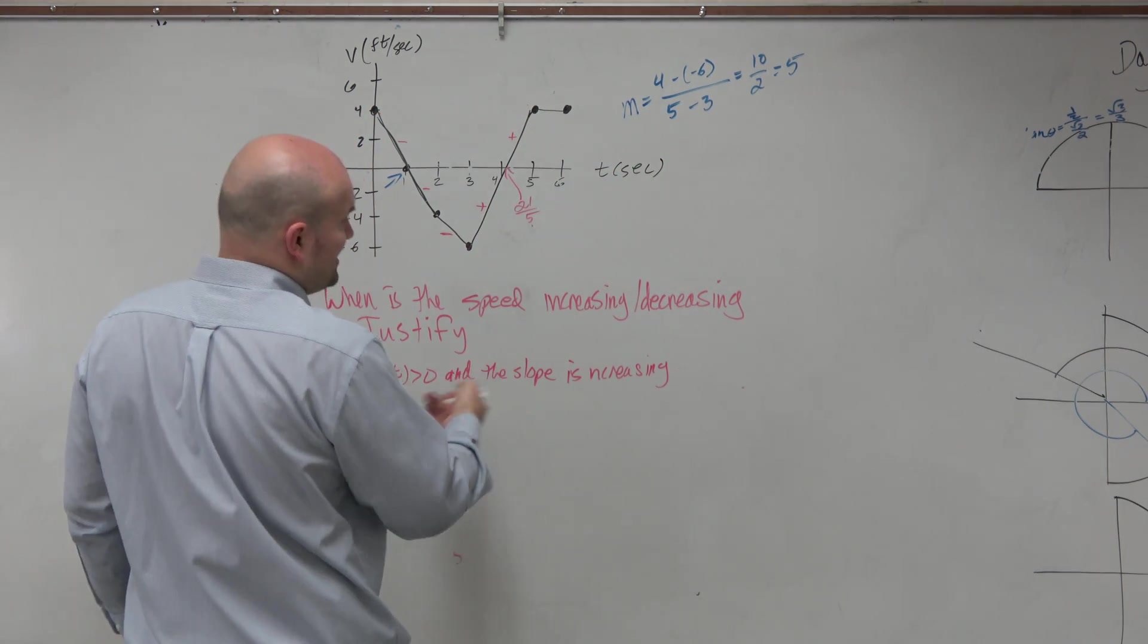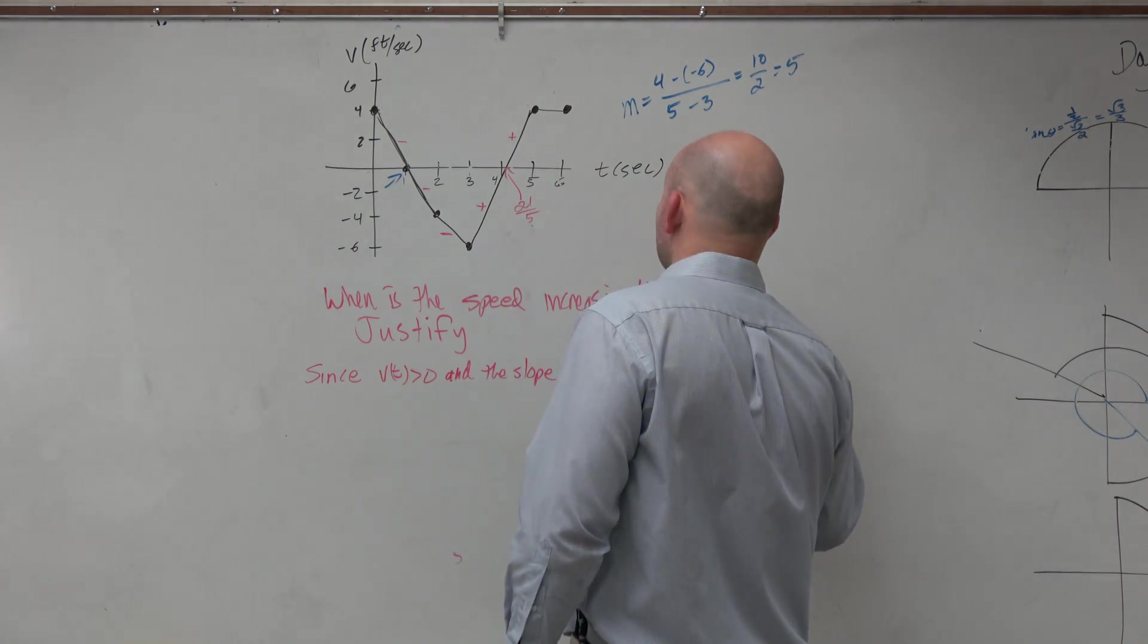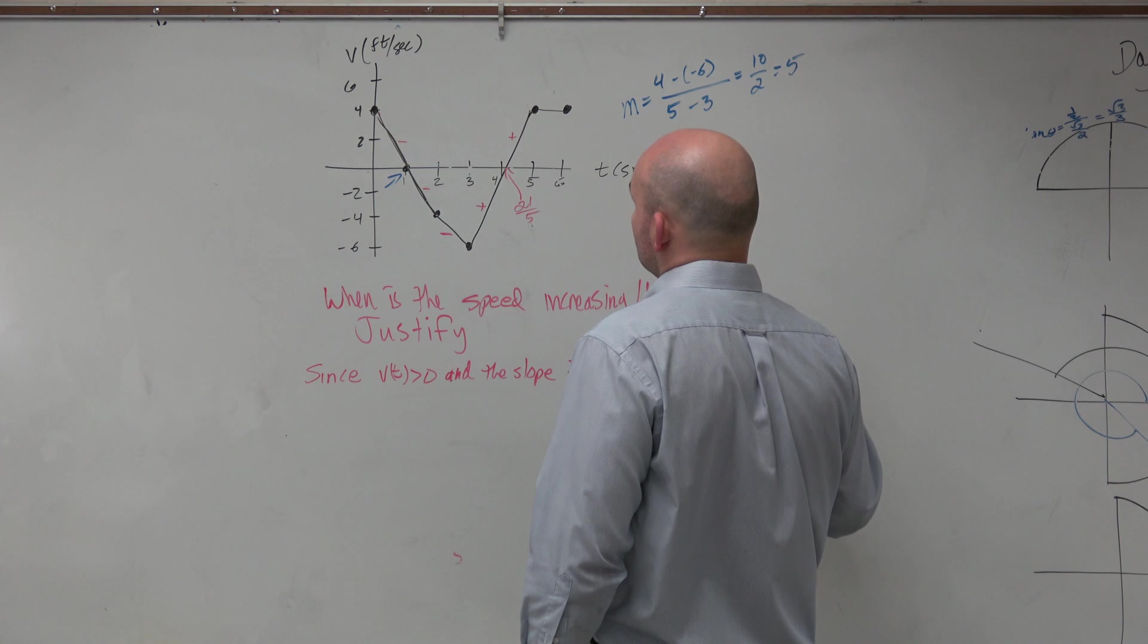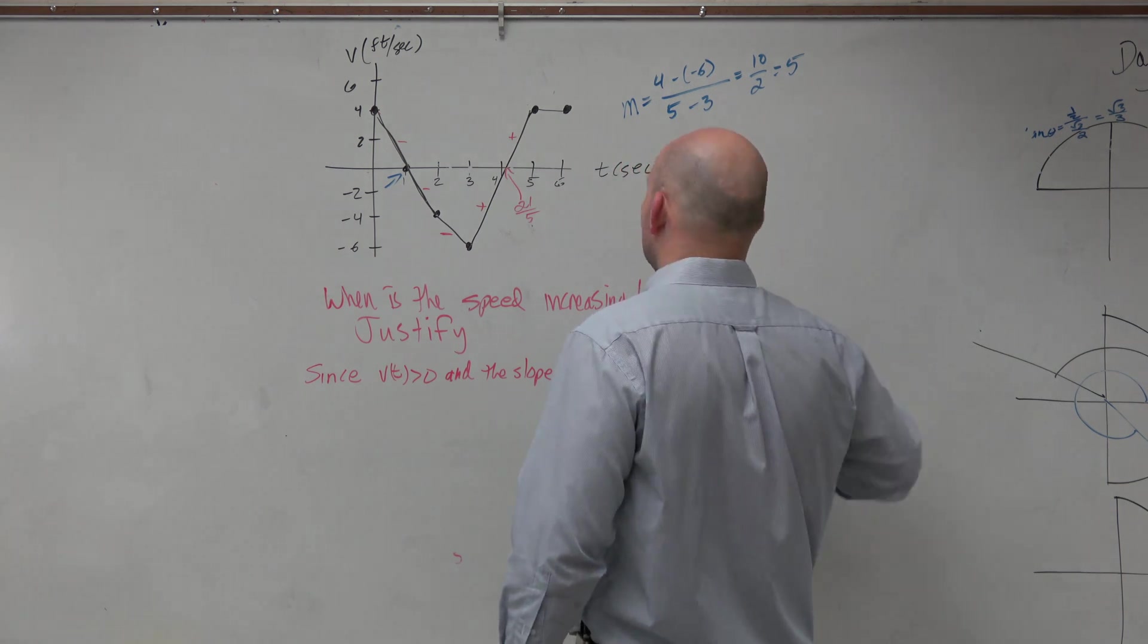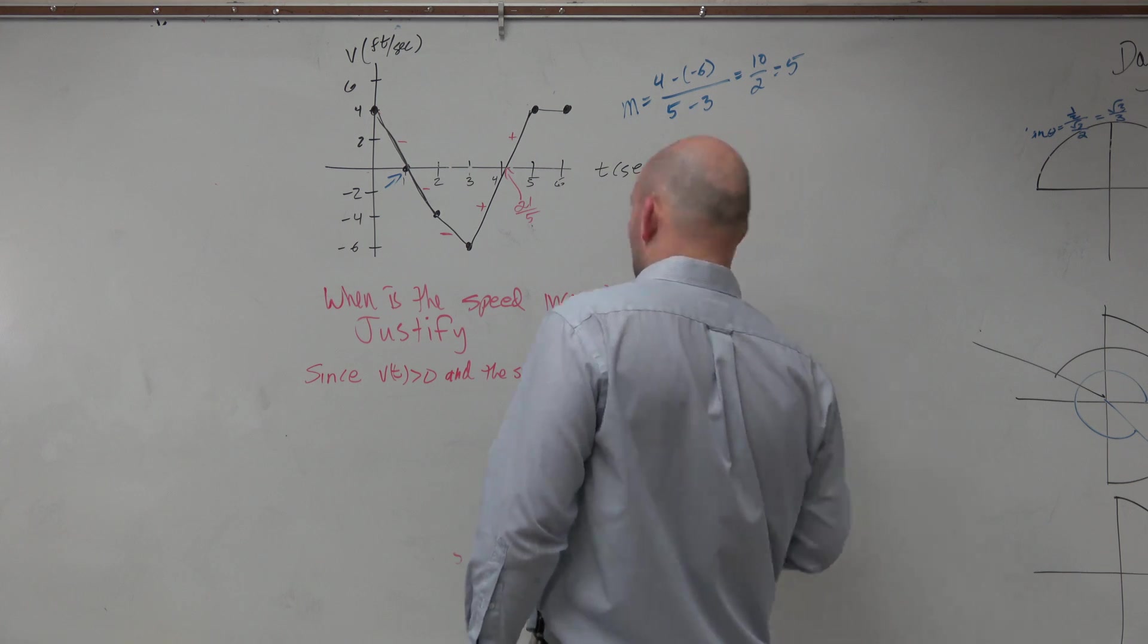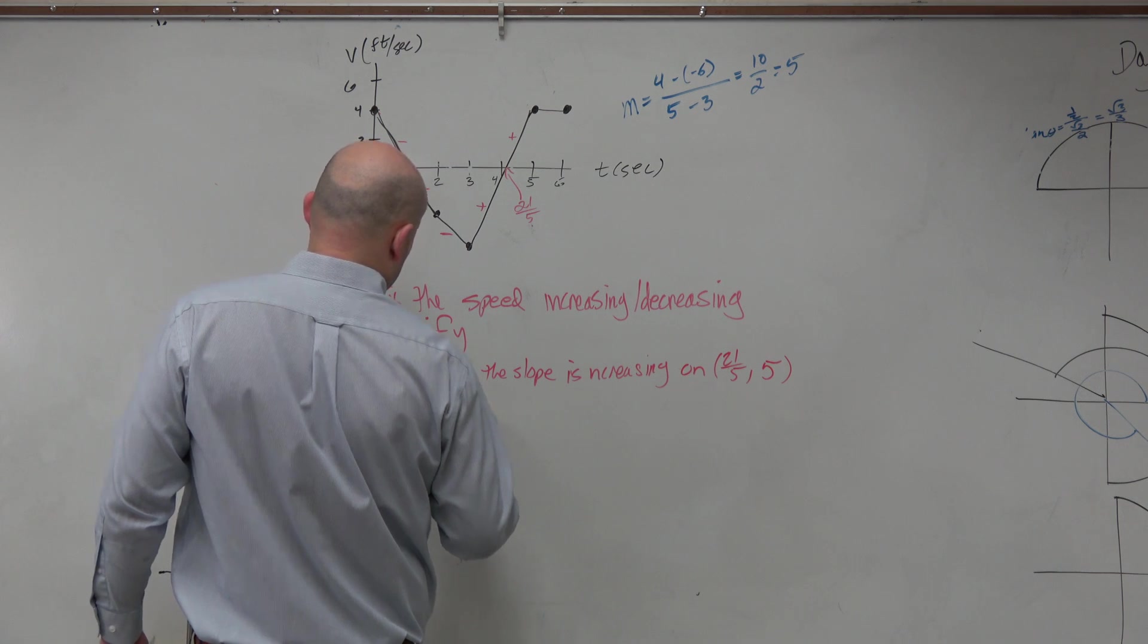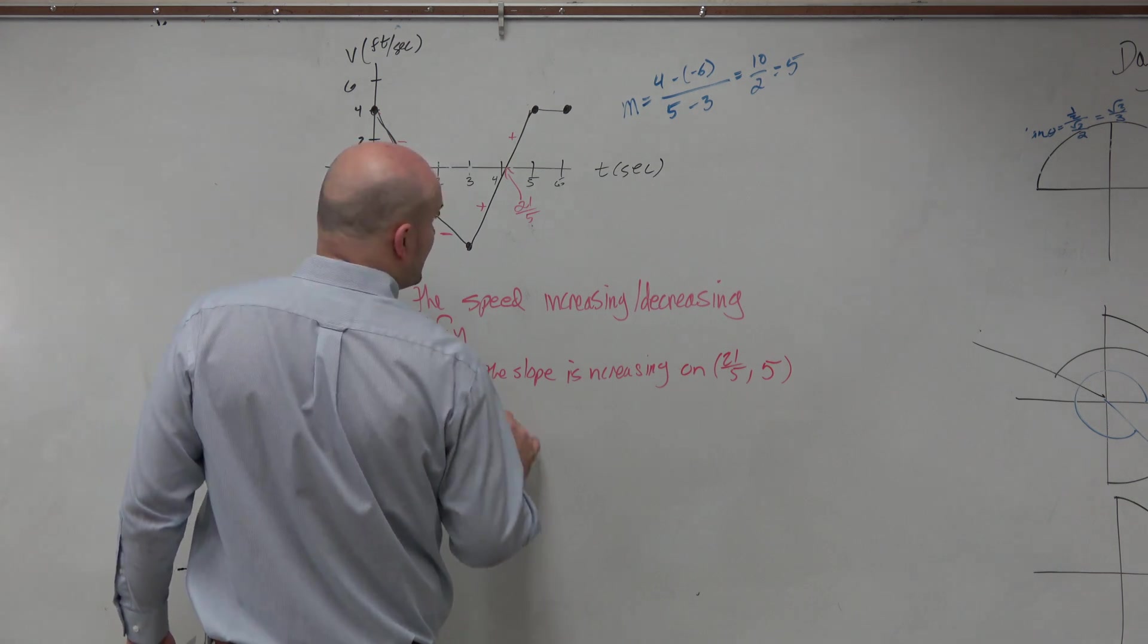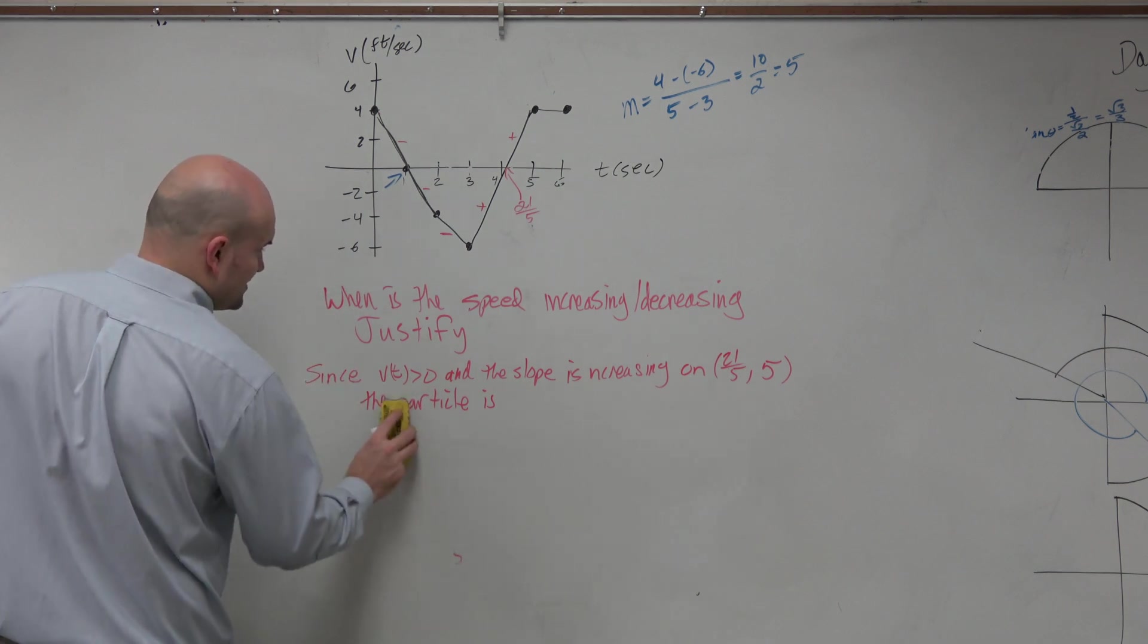And since the slope is increasing on the interval 3, 21/5. No I'm sorry, what am I doing? 21/5 to 5, the particle is, the speed is increasing.